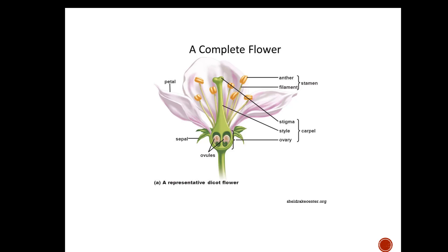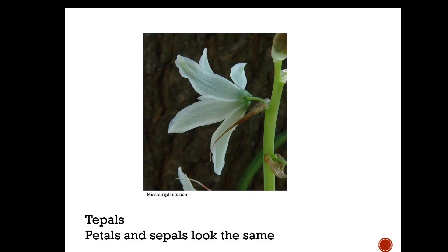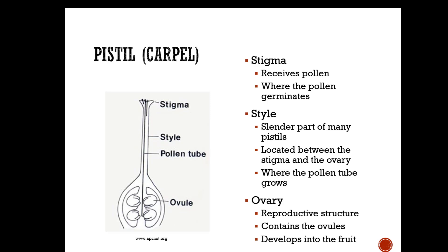Here's a complete flower that's a dicot — you can see it has everything: the petal, the sepal, the stamen, and the carpel or pistil. Sometimes you can't differentiate between the petals and the sepals, so they're called tepals. This is a true lily.